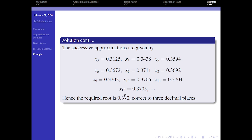Up to three decimal places, the roots become repeated. So therefore, the required root is 0.370, correct to three decimal places. Thank you.